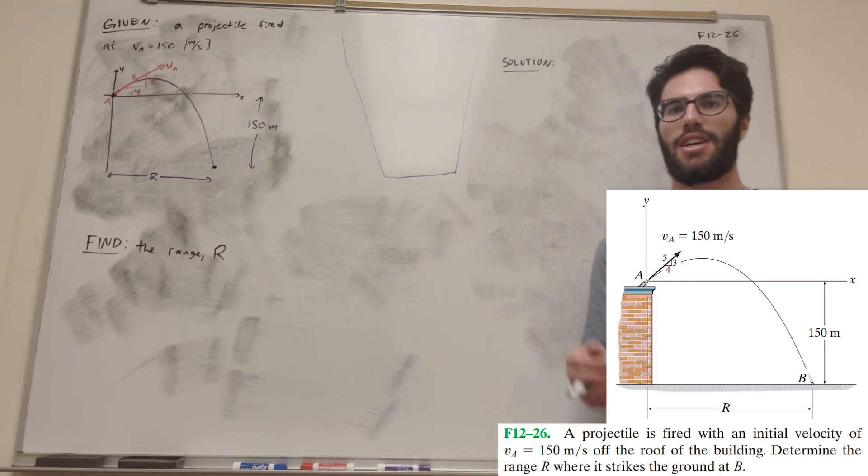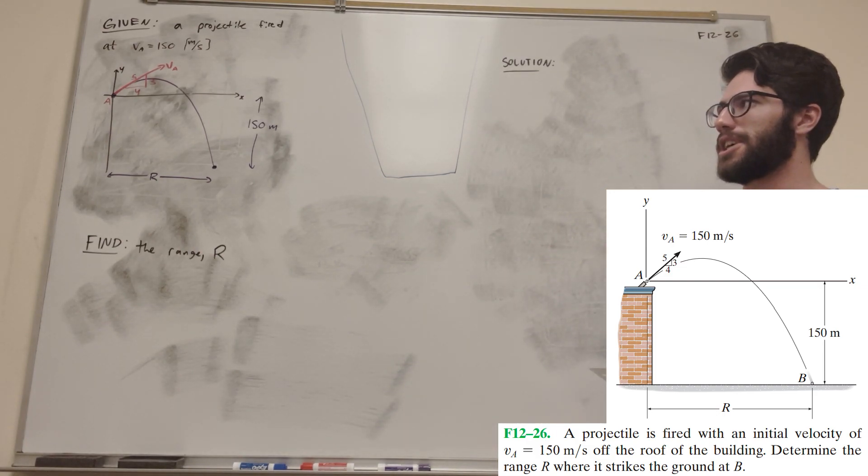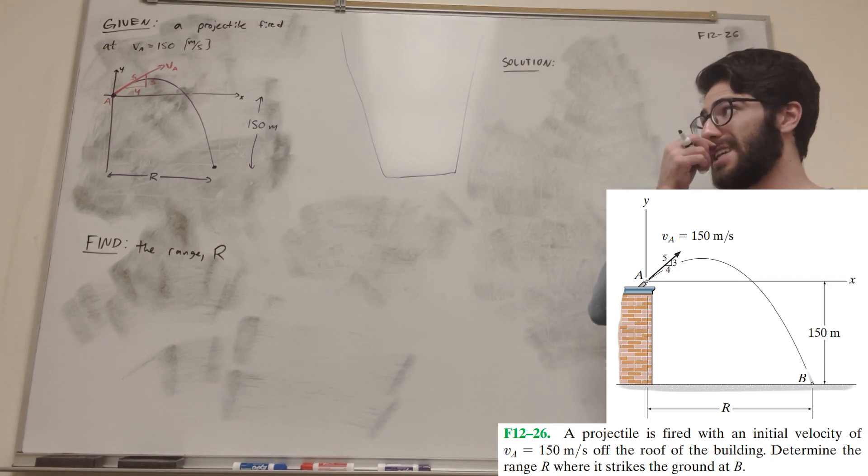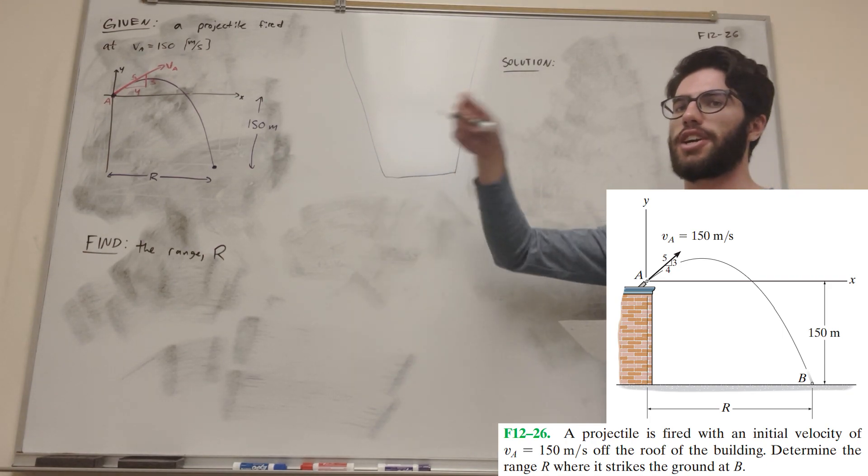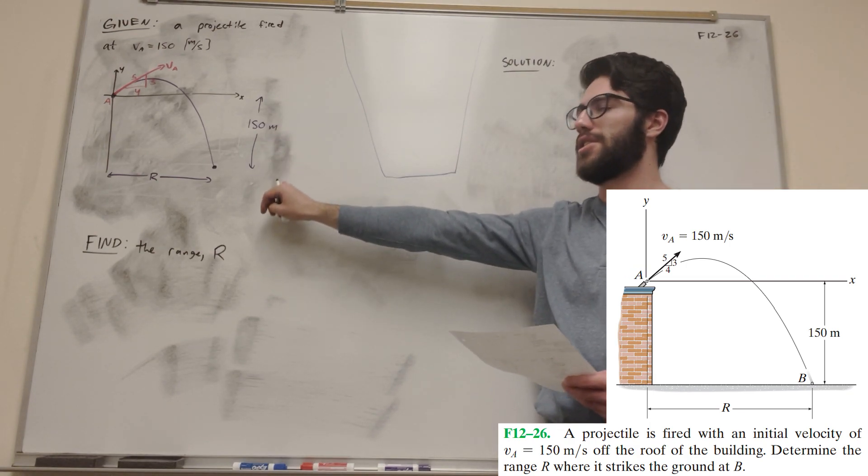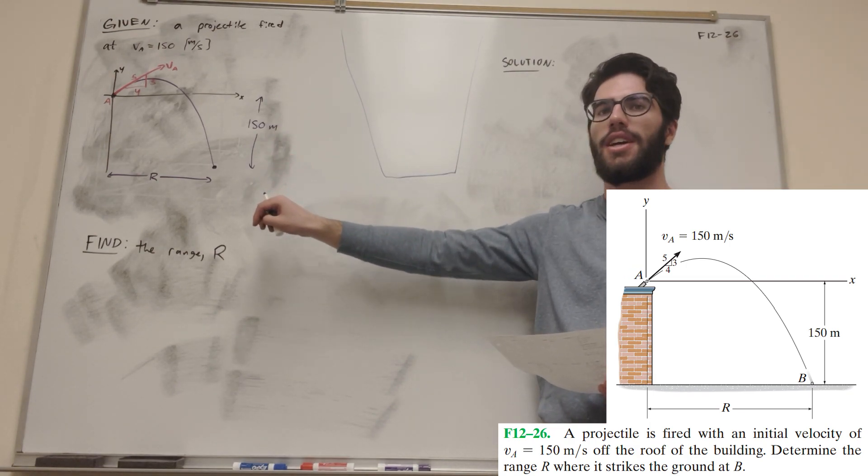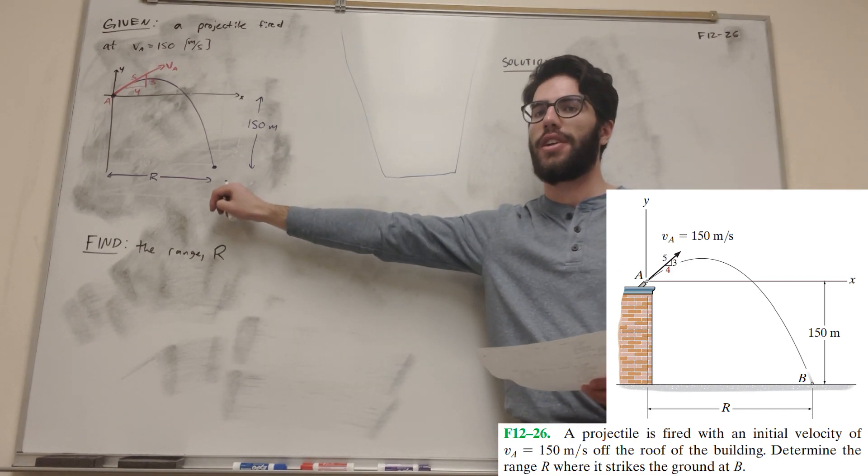What's up CalcGang, welcome back to Dynamics. So we got this problem here, we're shooting a projectile off a roof and we're firing it at 150 meters a second at this angle, the 3-4-5 triangle, and then we see that it falls 150 meters below where we shot it from, and our goal is to find the distance R that it travels.